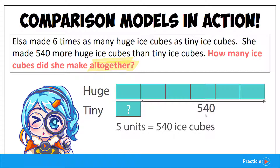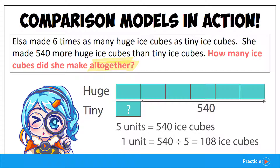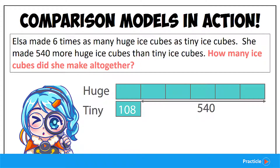How much do we get when we divide 540 by 5? When we divide 540 by 5, we should be able to get 108. And once we know how many ice cubes one unit represents, we can then move on to find the total number of ice cubes.